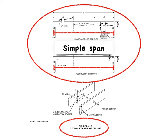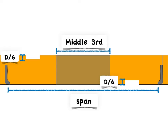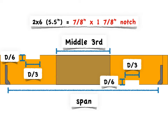Outside of that middle third, where tension and compression reduce to zero at the bearing ends, notches can be as deep as one-sixth the joist depth and as long as one-third the depth. Since a 2x6 is the smallest joist with a span provided in the code, you'll always be good with at least a seven-eighths inch deep notch by one and seven-eighths inches long. As you get to bigger joists, the notch dimensions increase accordingly.